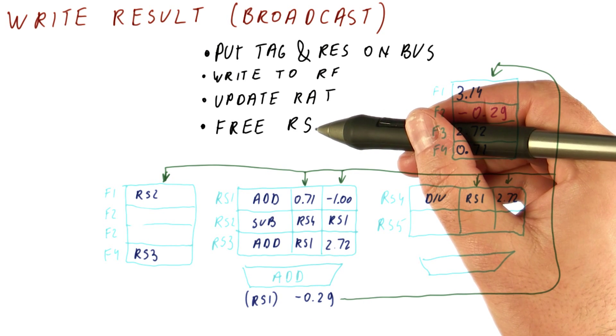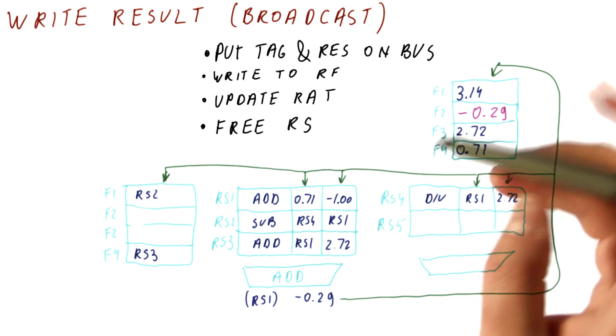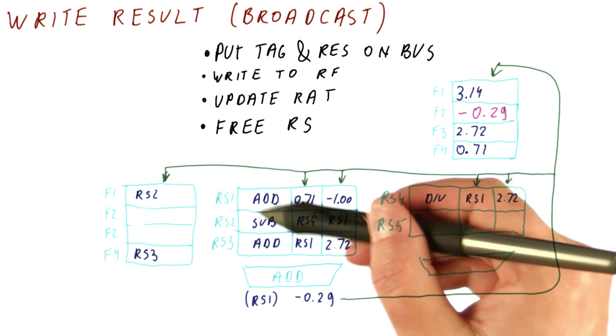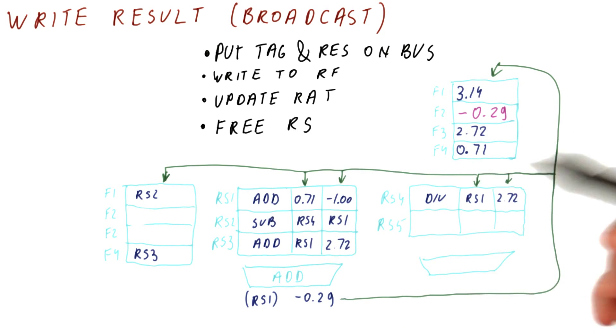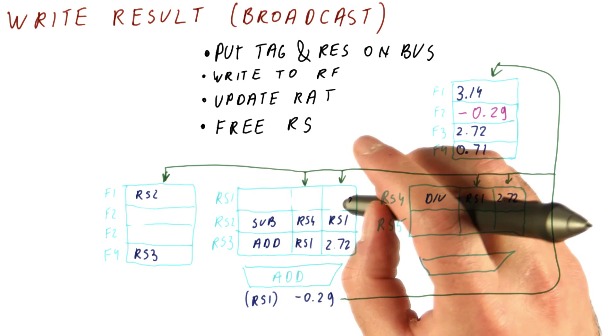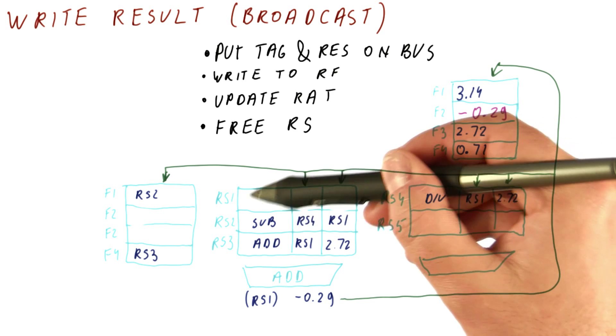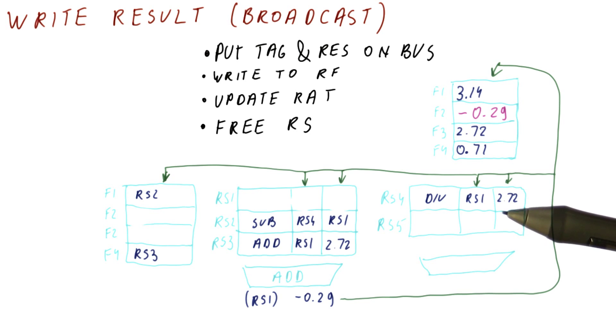The last thing we need to do is free the reservation station. The reservation station whose name matches is now marked as empty so it can accept a new instruction. In this case, we just delete stuff from it, but in real hardware there will be a valid bit here that says this is an empty reservation station.